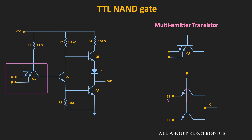In the actual circuits, instead of having two separate transistors, we have a single transistor where the base and collector terminals are common, but it will have two emitter terminals. So in this TTL NAND gate, depending on the required number of inputs, this multi-emitter transistor is used. This circuit is the example of the two-input NAND gate.